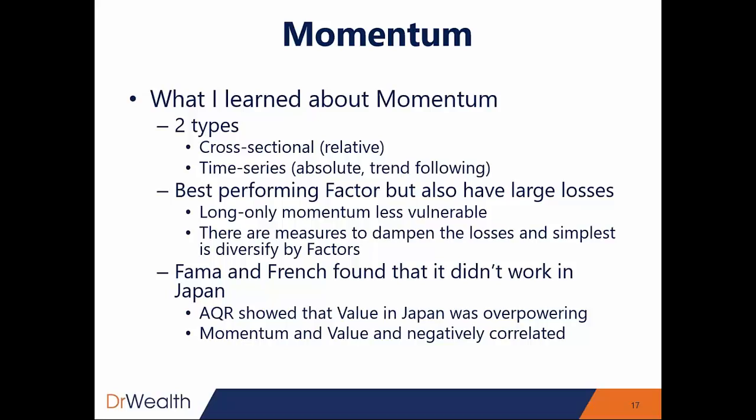This is the best performing factor, but you also have large losses. For example, in the 2008 financial crisis, momentum had almost half of the portfolio wiped out. When the market turns — especially during the 2008 financial crisis — the 2009 rebound was very fierce. Momentum had a very big issue when it comes to rebounding. It wasn't the crash part that hurt momentum — it was the rebound in 2009 where momentum lost a lot of money.